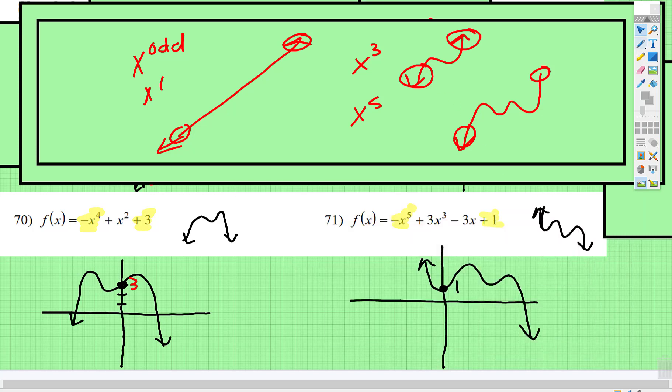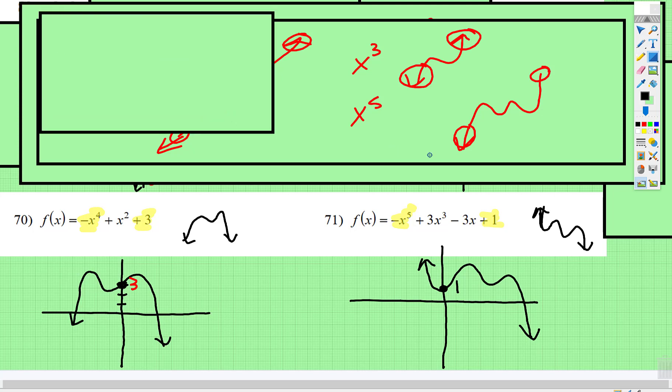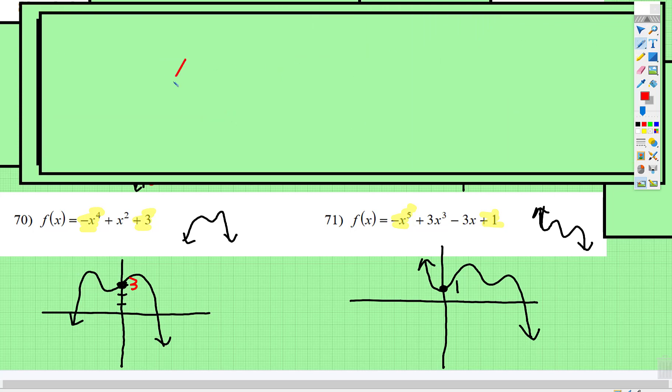And then finally, we have a negative x to the 5th. So remember, if it's an x to the odd, a positive one looks like this. A negative x to the odd will be coming from this direction.